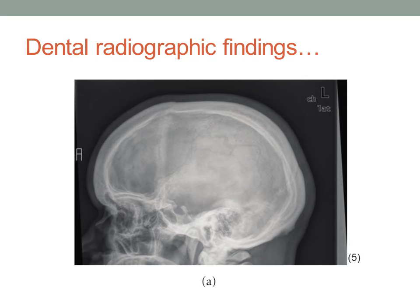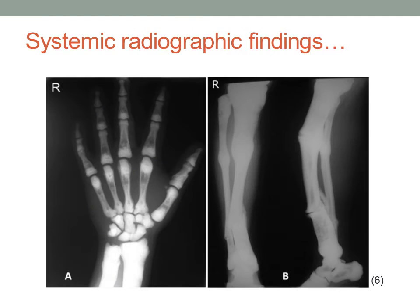Here's a nicer radiograph showing the diffuse radio-opacity of osteopetrosis. The sagittal view perfectly depicts the sclerosis that can happen in the calvaria. These are some other radiographs showing the systemic effects of the disease, which in this case are apparent on the phalanges, tibia, and fibula.